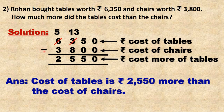Solution — statement: 6,350 rupees cost of tables minus 3,800 rupees cost of chairs. 0 minus 0 is 0. 5 minus 0 is 5. 3 minus 8 is not possible, so we borrow from thousands place — 6 becomes 5, 3 becomes 13. 13 minus 8 is 5.